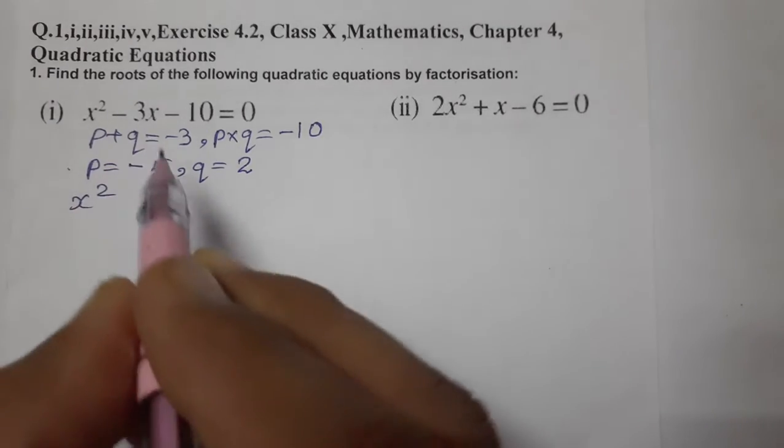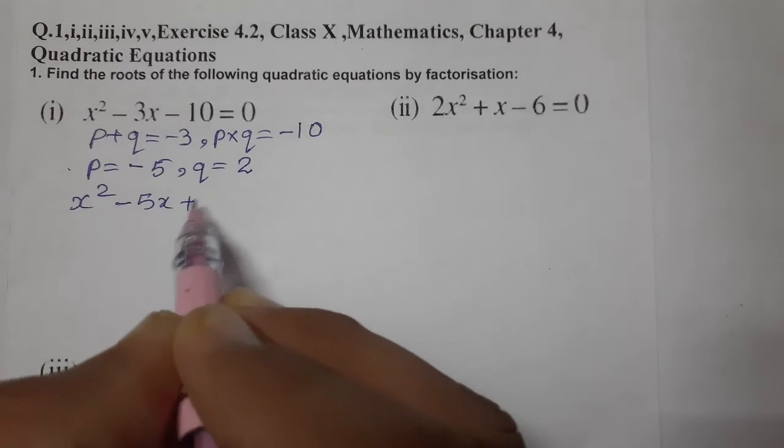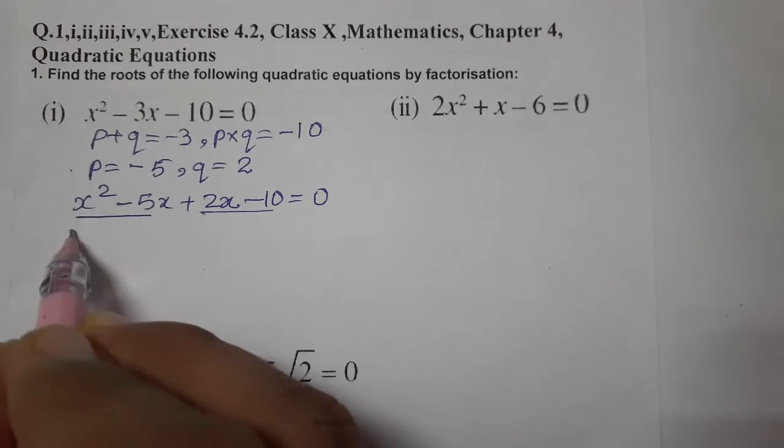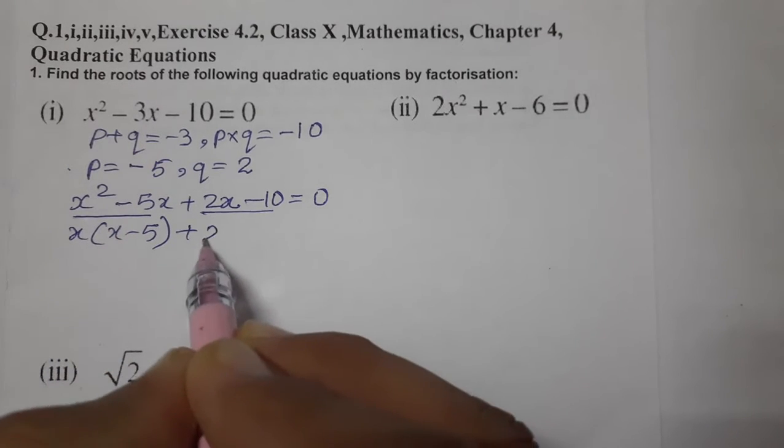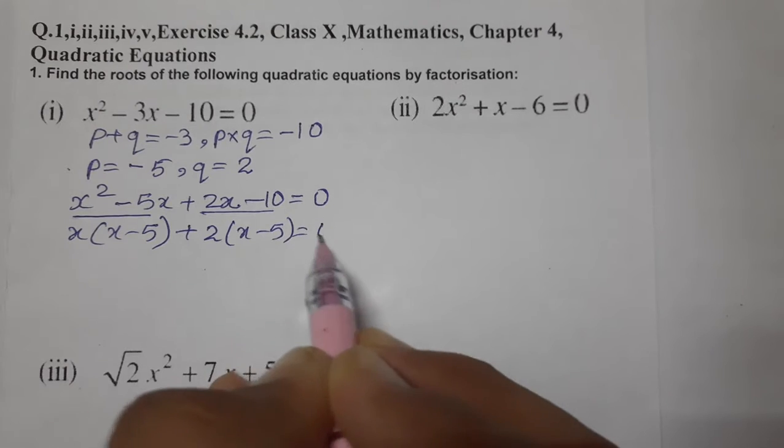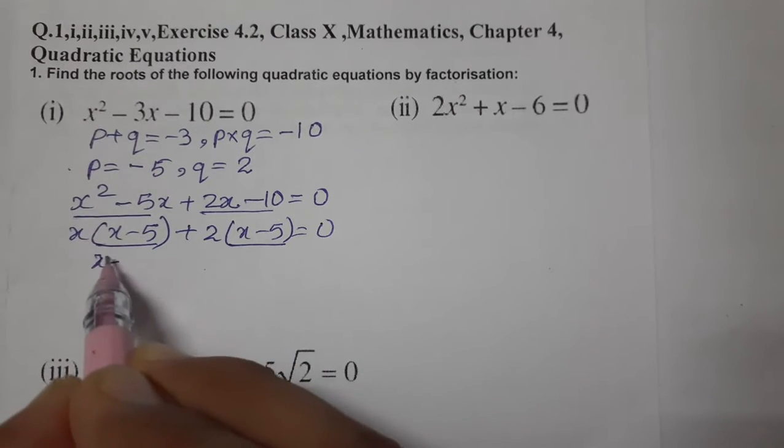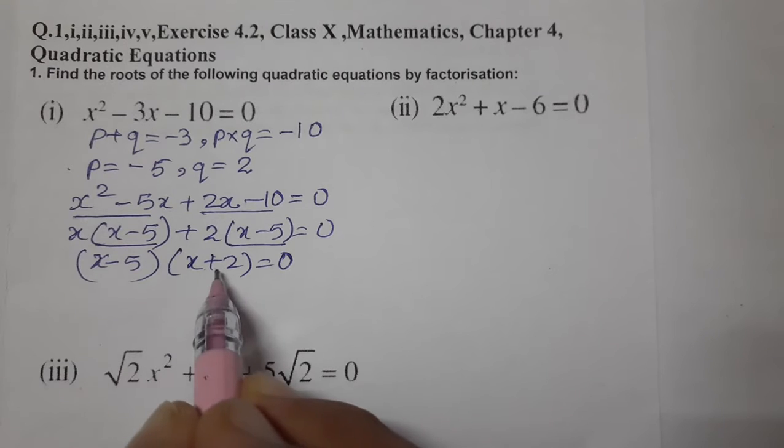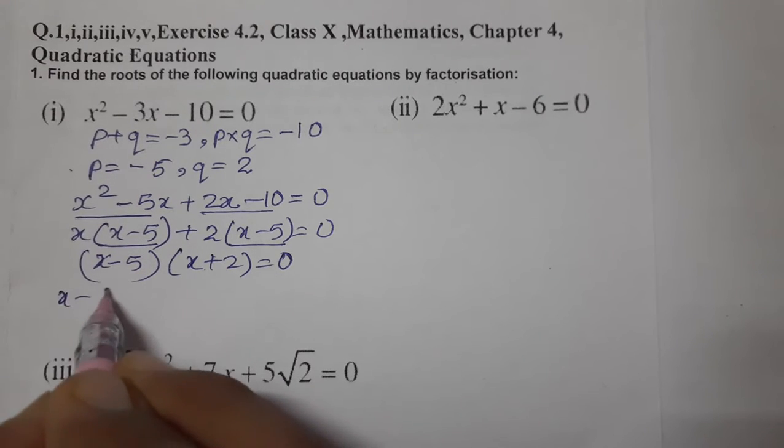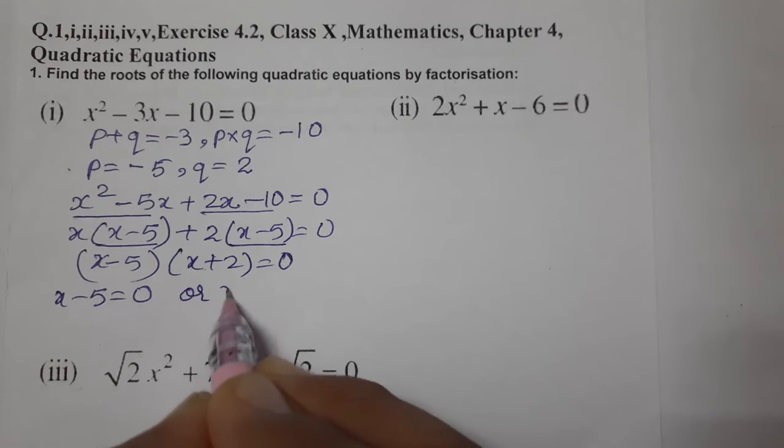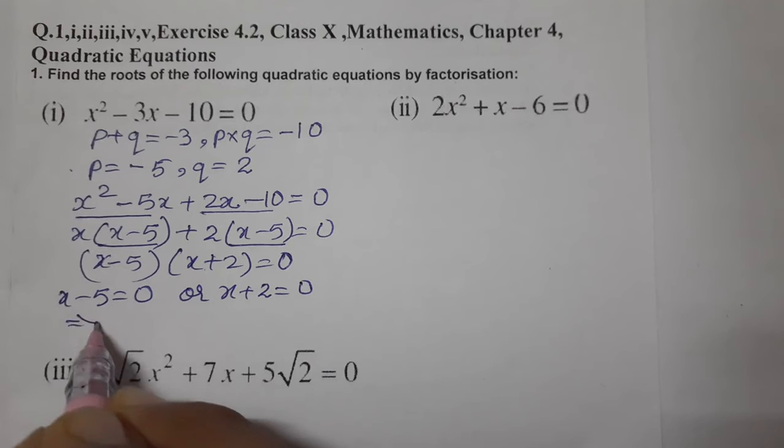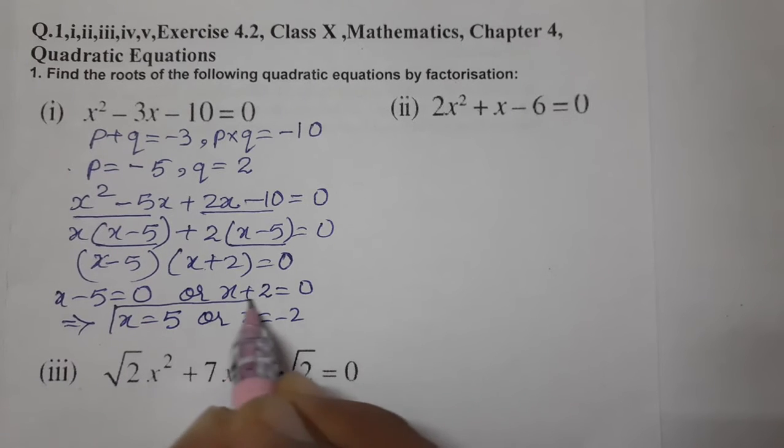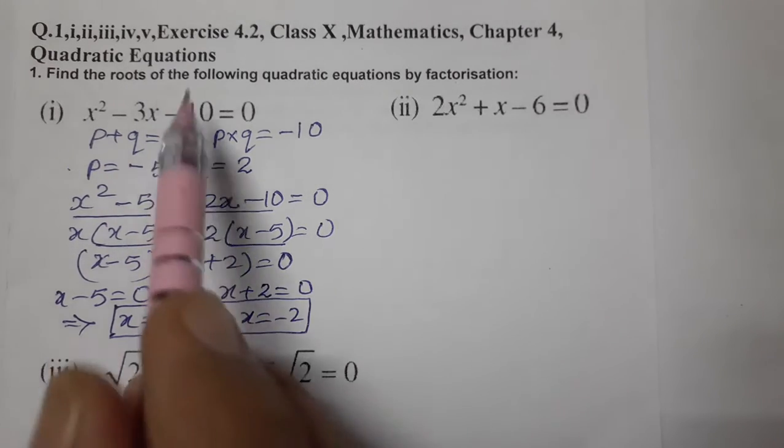So p = -5 and q = 2. We can write x² - 5x + 2x - 10 = 0. Now take common in pairs: x(x - 5) + 2(x - 5) = 0. Taking (x - 5) common: (x - 5)(x + 2) = 0. The product of two numbers is zero, so x - 5 = 0 or x + 2 = 0. This gives x = 5 or x = -2. These are the two roots of the quadratic equation.